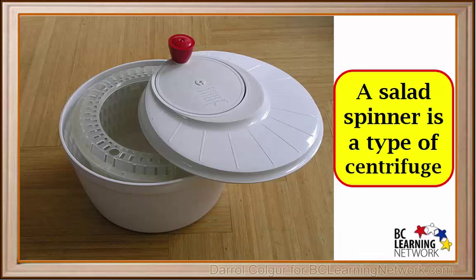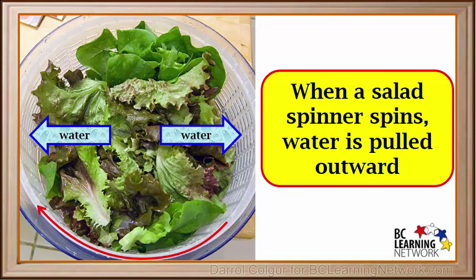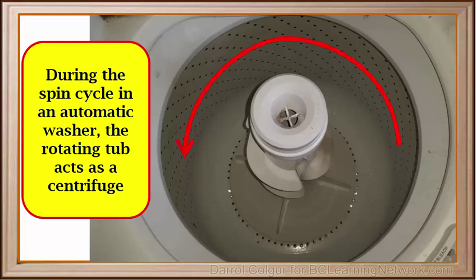A salad spinner that you might find at home is actually a type of centrifuge. When a salad spinner spins, water is pulled outward, and the plastic mesh holds the lettuce in, so it separates the water from the lettuce. Another centrifuge in many homes is an automatic washer. During the spin cycle, the rotating drum acts as a centrifuge, and water is pulled outward from the clothes. In this way, they already have lots of water removed before they go into the dryer.